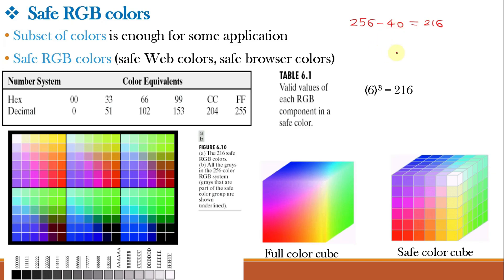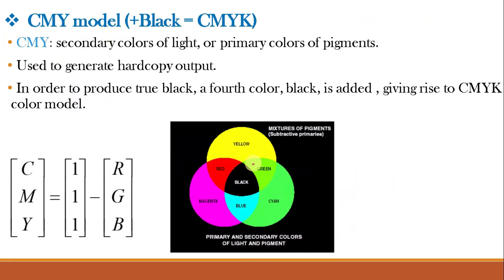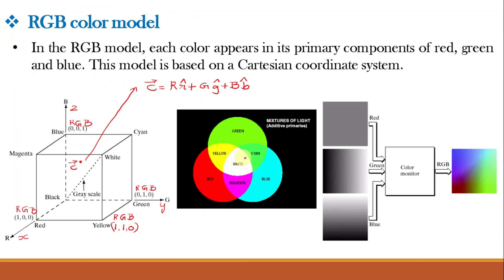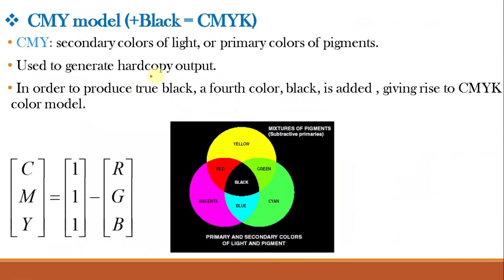The CMY color model: CMY are secondary colors of light, or alternatively primary colors of pigment. CMY colors can be obtained by complementing the RGB colors, i.e., 1 minus RGB. For example, when a surface coated with cyan pigment is illuminated with white light, no red is reflected because cyan subtracts red from reflected white light, and cyan is made up of green plus blue. So: white minus red gives cyan.